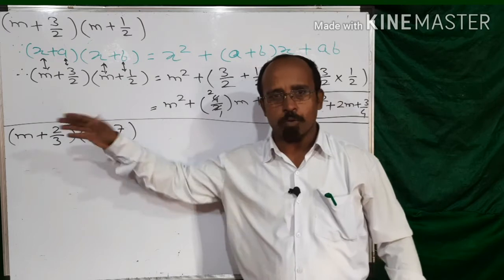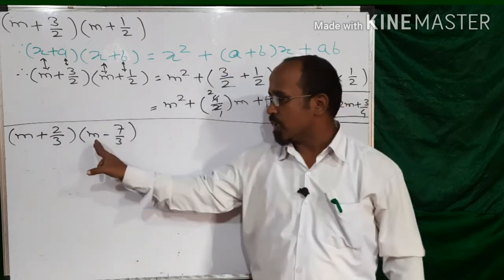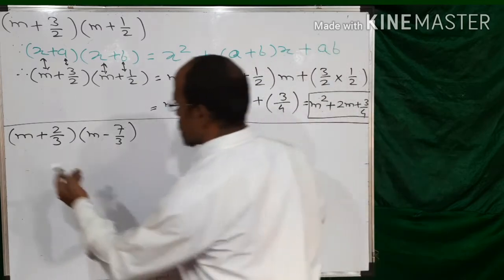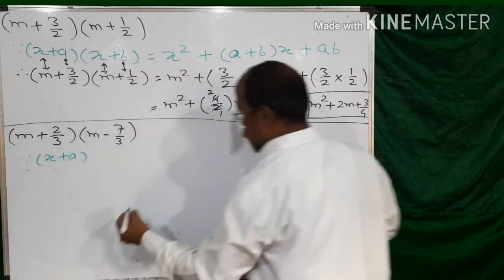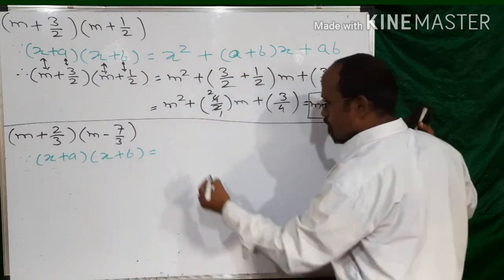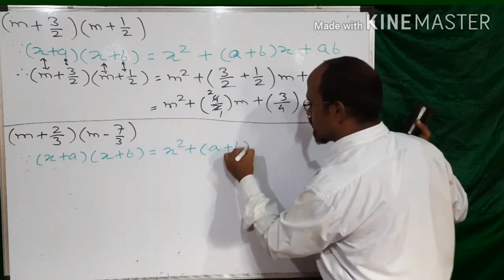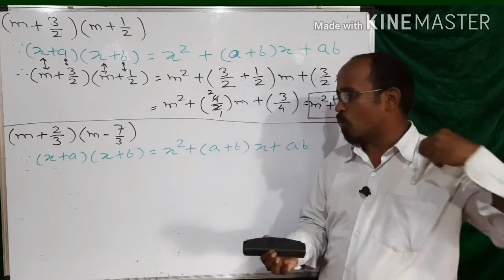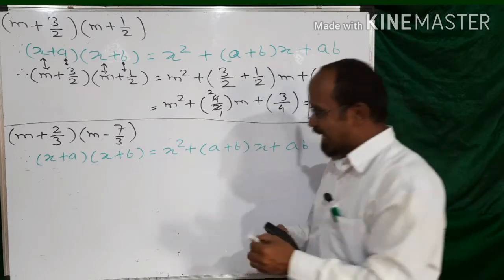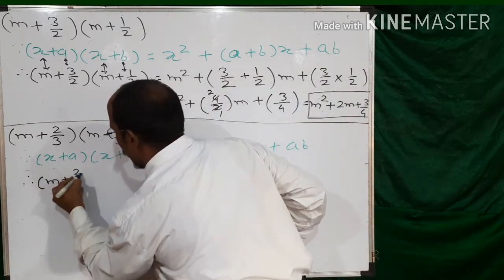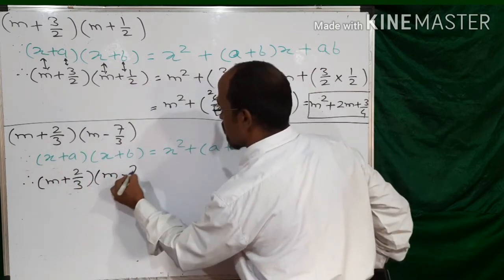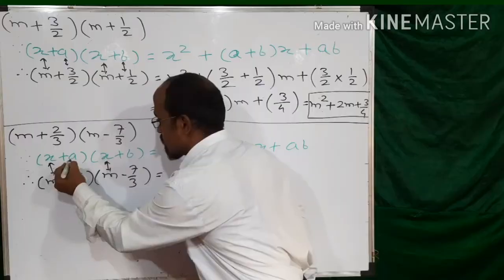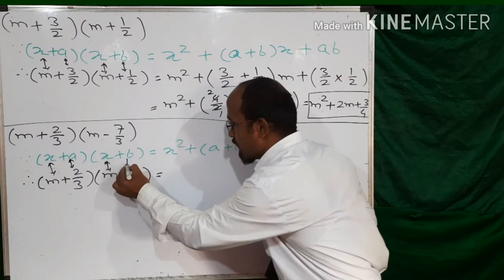Can we use the formula of (x + a)(x + b)? First condition: multiplication of two brackets — okay. Second condition: the first term is the same — okay. So we can use the formula. The formula is: if (x + a)(x + b) equals x² + (a + b)x + a·b. Then for (m + 2/3)(m − 7/3), x will be replaced by m at both places, a will be replaced by +2/3, and b will be replaced by −7/3.